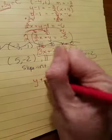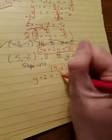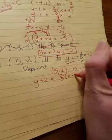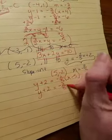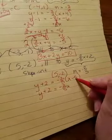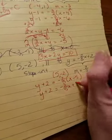y minus a negative 2 equals my slope parenthesis x minus 5. Okay, so let's distribute that in. We get negative 2 fifths x. Negative 2 fifths times negative 5, that's going to be a positive 2.